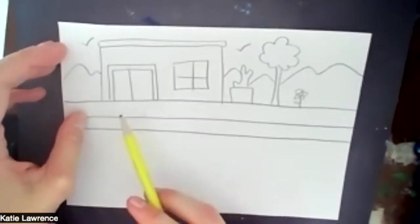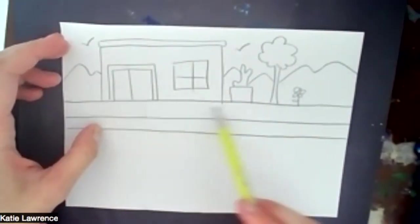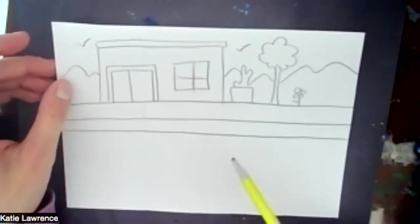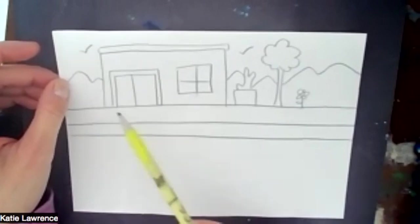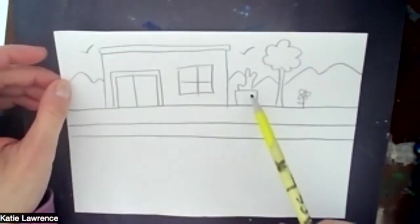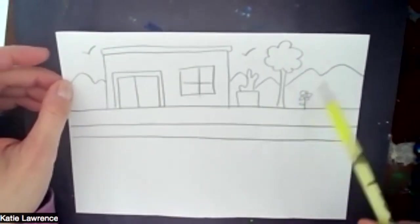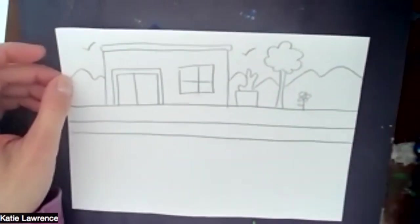Can you ask the person next to you, what did you draw on your ground line? And describe to them what you drew on your ground line. So I drew a house, mountains, a cactus, a tree, a flower, and birds. Go ahead.